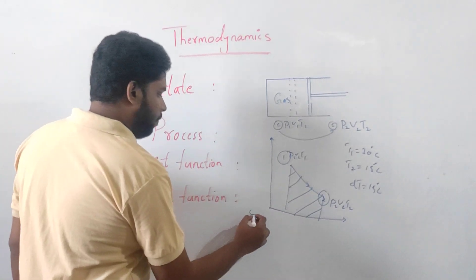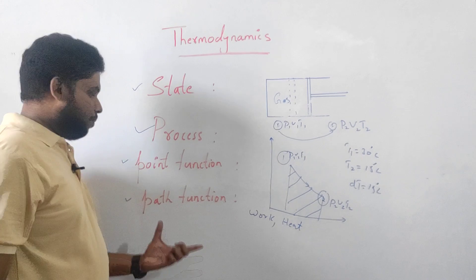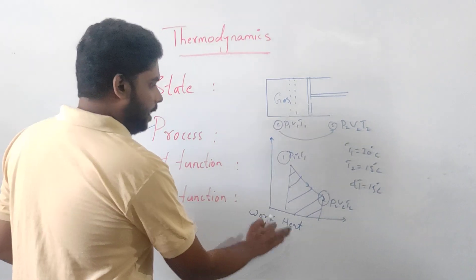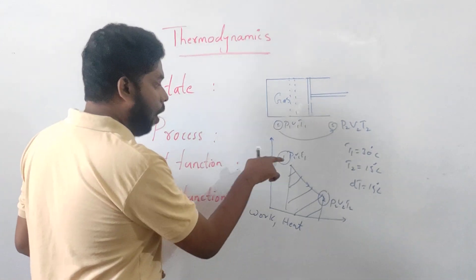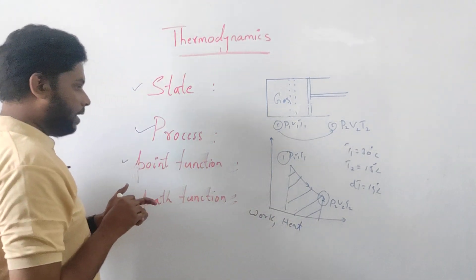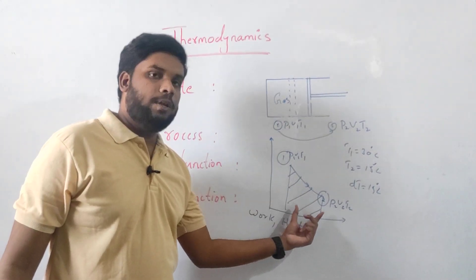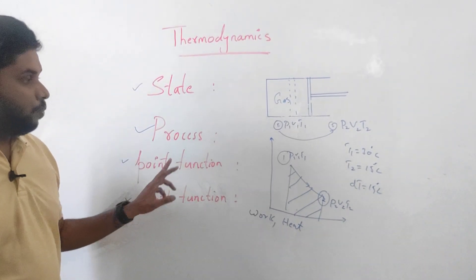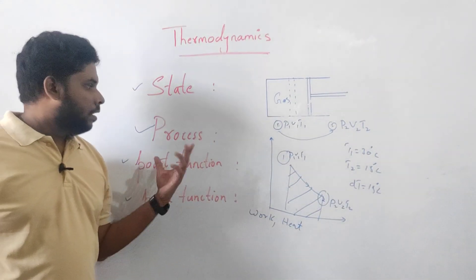Path function examples are work and heat. Heat energy, energy is also a path function. You cannot write work as W1 minus W2, you cannot write heat as Q1 minus Q2 or Q2 minus Q1. Heat and work are path functions which depend on how the system has gone from state one to state two. Path function means we consider the area in the graph - area under the curve from one to two points will give the path function. Work and heat are path functions. We have point functions like temperature, pressure, and volume. Thank you.